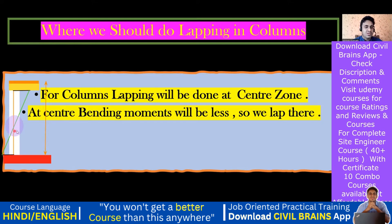So this is the zone where the bending moment is minimum. Wherever the bending moment is minimum, we do the lapping. If this is the complete height of the column, exactly at the center the bending moment is minimum — so for columns, lapping will be done at the center zone.